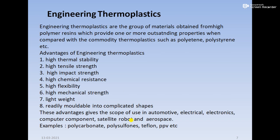Next is engineering thermoplastic. Thermoplastics are the group of materials obtained from polymer resins which provide one or more outstanding properties when compared with commodity thermoplastics such as polyethylene, polystyrene, etc. If you use engineering thermoplastic instead of commodity plastic, we get properties like high thermal stability, high tensile strength, high impact strength, high chemical resistance, high flexibility, high mechanical strength, lightweight, and readily moldable into complicated shapes.